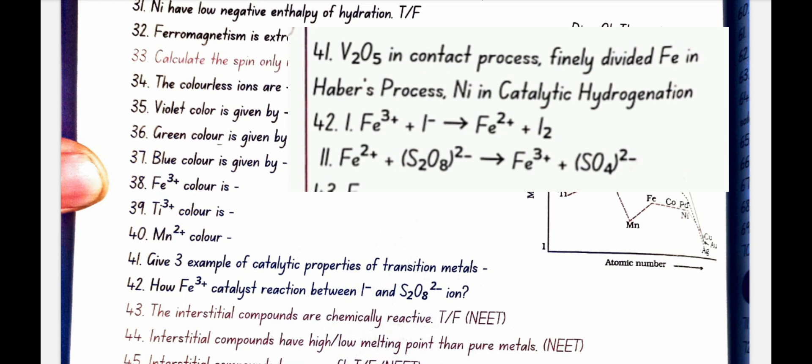How Fe3 plus catalysts reaction between I- and S2O8 2- ion? First Fe3 plus reacts with I- and gives Fe2 plus plus I2. Second equation is Fe2 plus plus S2O8 2- gives Fe3 plus plus SO4 2-.